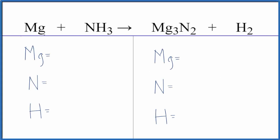Let's balance the equation for Mg plus NH3, magnesium plus ammonia, and this reaction would happen at about 700 degrees Celsius, so it'd have to be pretty warm for this to happen.